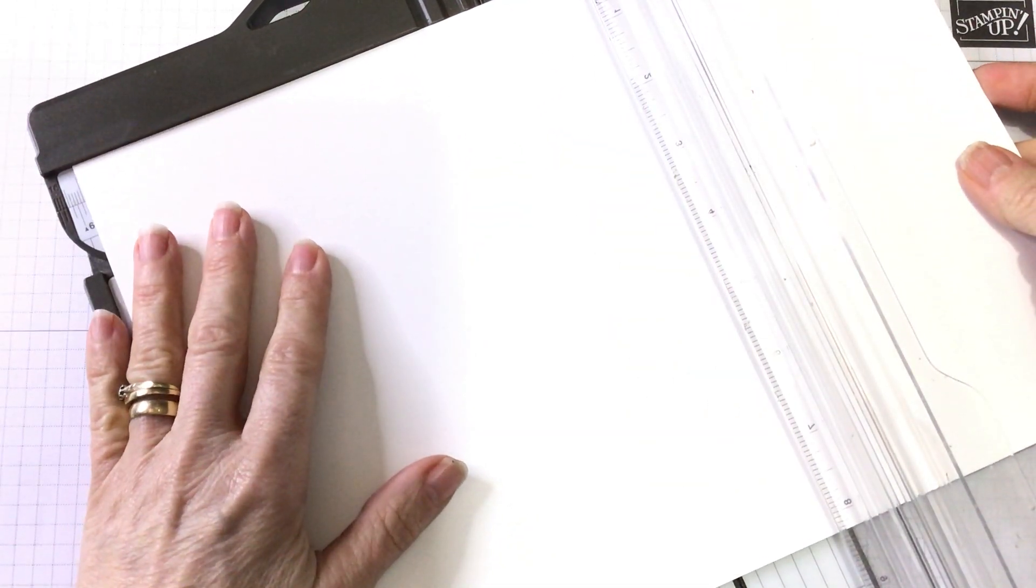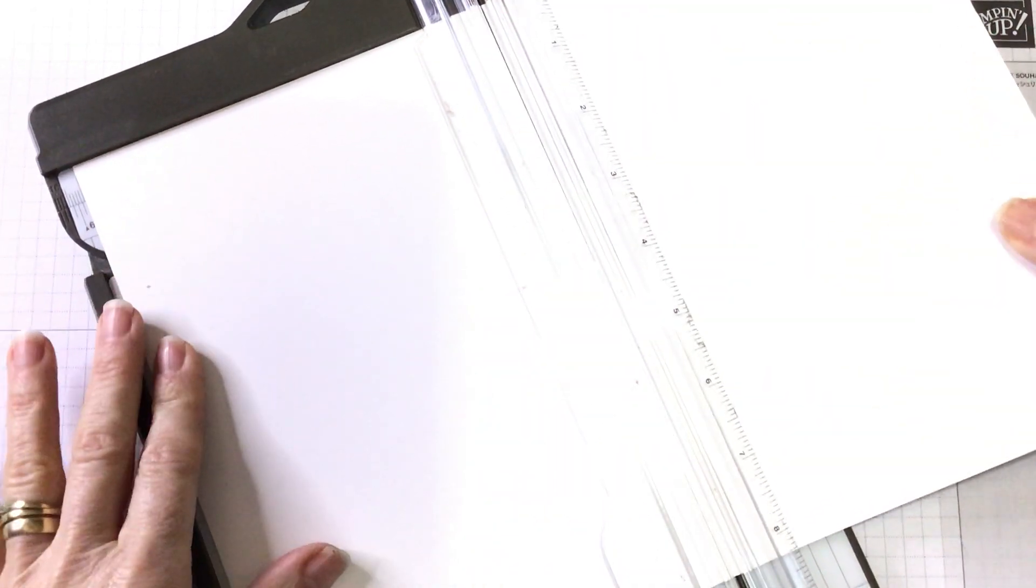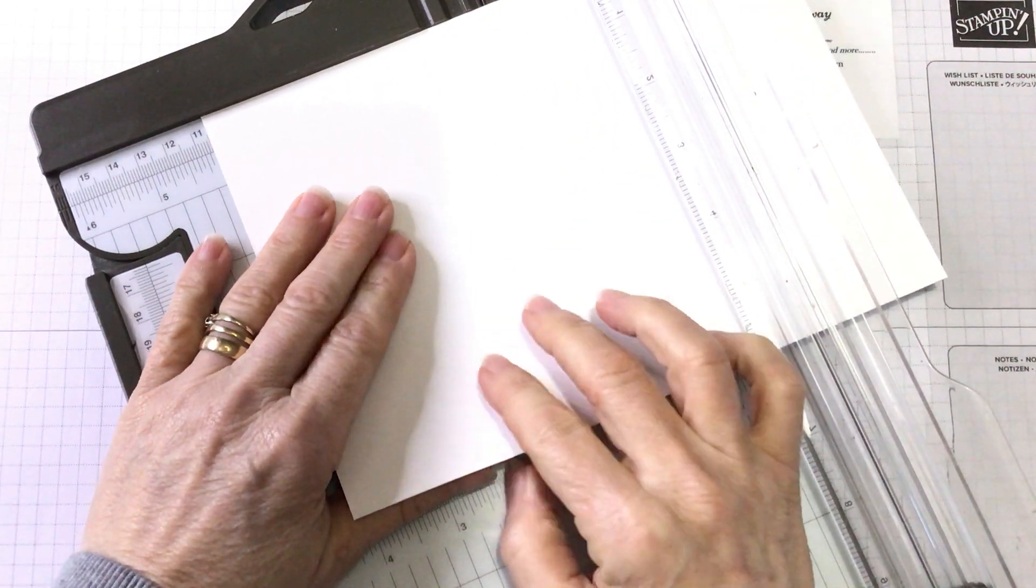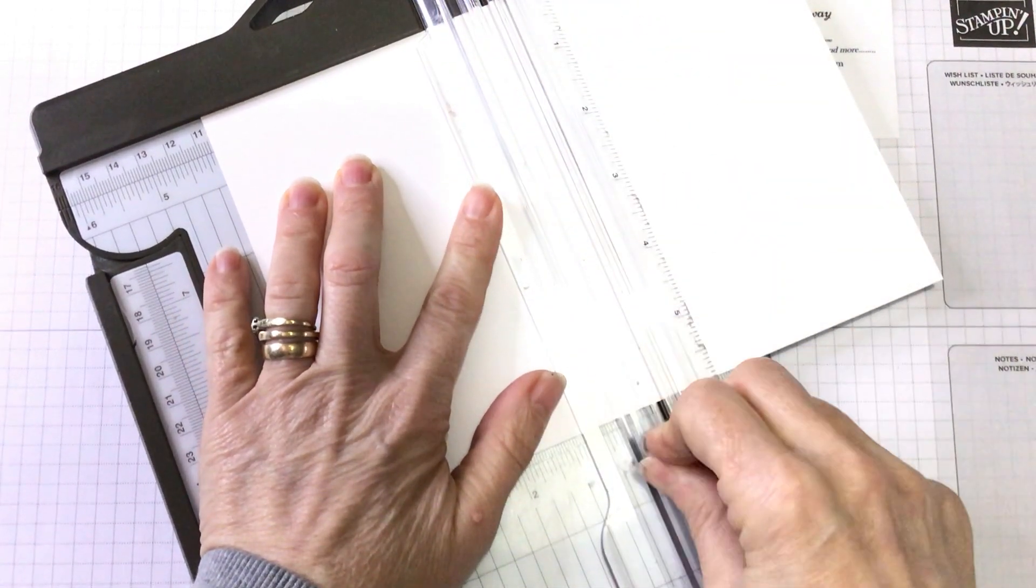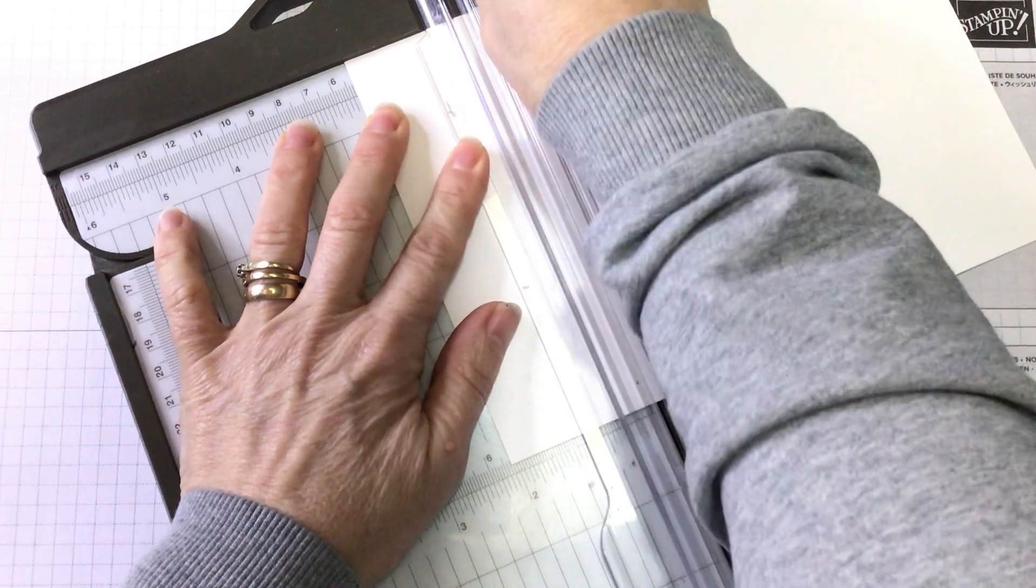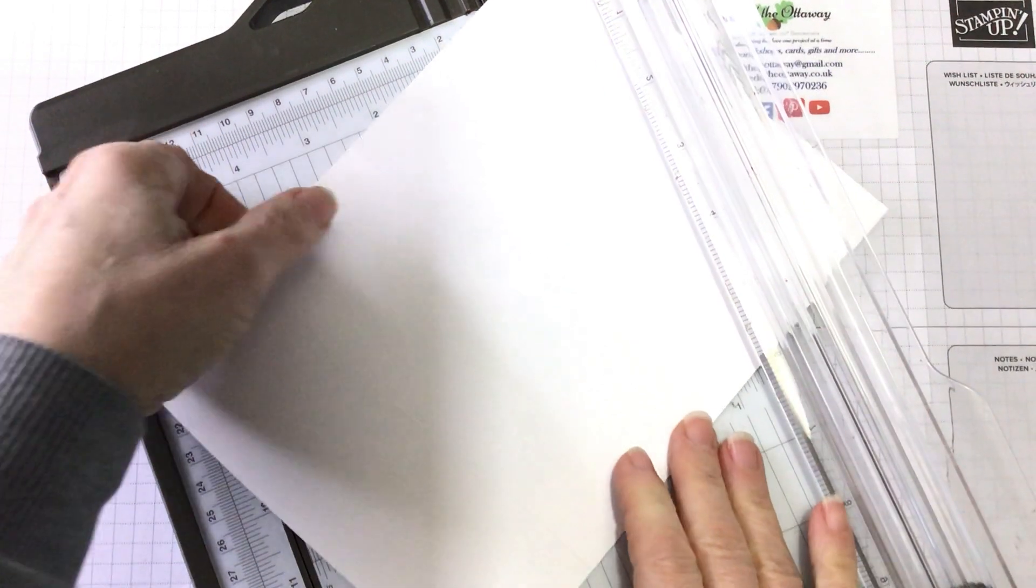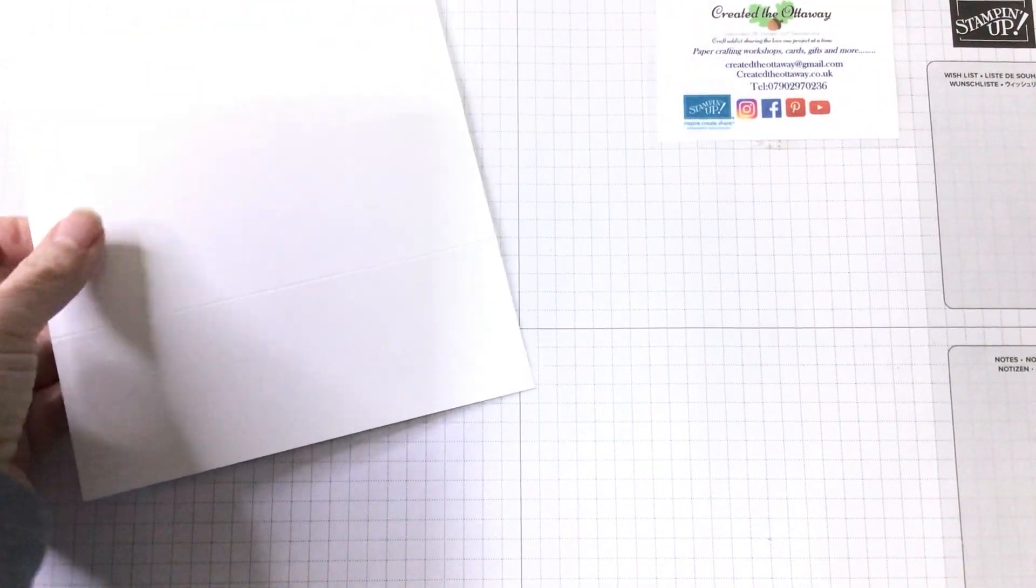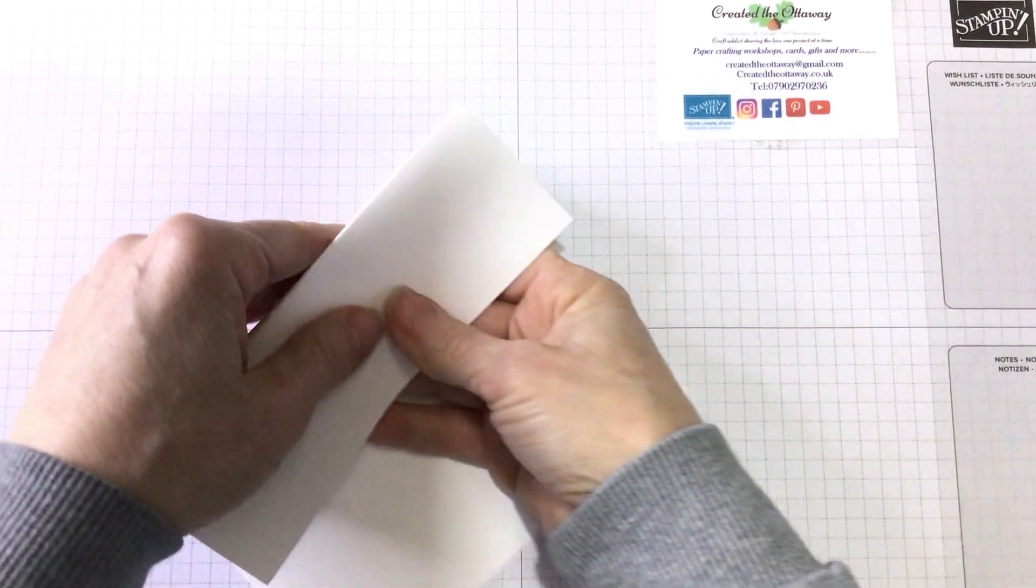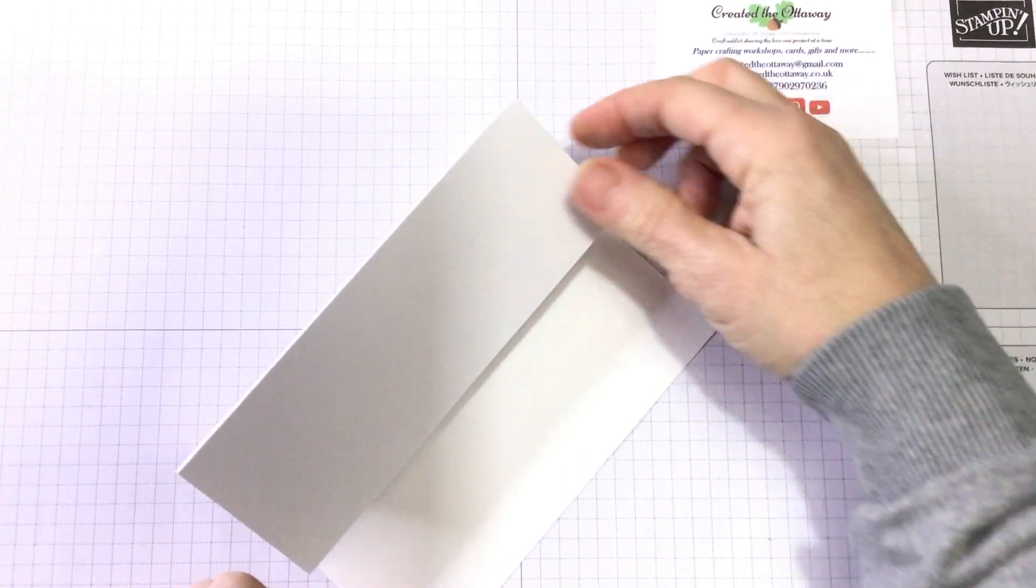So we're going to start with an A4 sheet of basic white card. And we're going to turn it onto the long side of the A4 and cut it at 5 and 7 eighths. So basically you're just cutting an A4 sheet in half. And then we're going to turn it sideways again, which is now on the longest side, and score it at 4 and 1 eighth. And then we also score it at 2 and 1 sixteenth, which is just turning that one side in half again. So that is going to be folded in half to make your base card and then fold it again to make your easel.